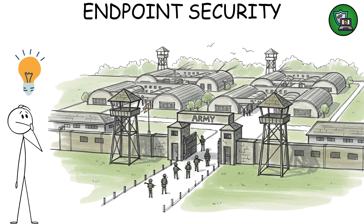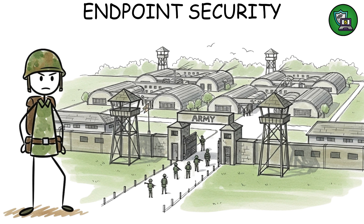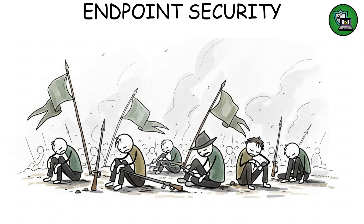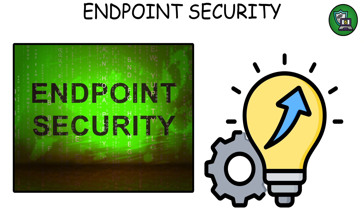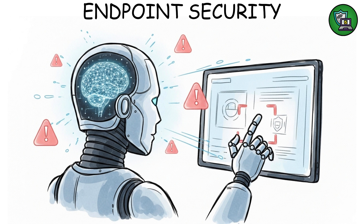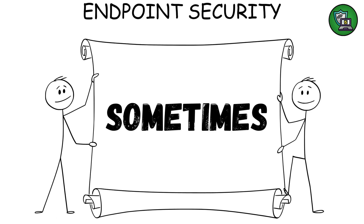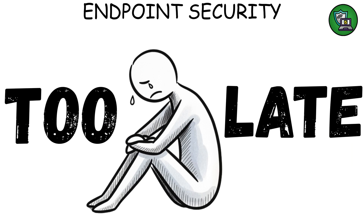Imagine an army base — each soldier, each device, must be strong, trained, and alert. If even one goes rogue, the whole mission can fail. In 2025, endpoint security is evolving fast, with AI-based threat detection and behavioral analytics that recognize attacks even before they execute. Because sometimes malware hides in memory or scripts that no antivirus can see until it's too late.